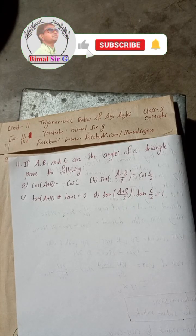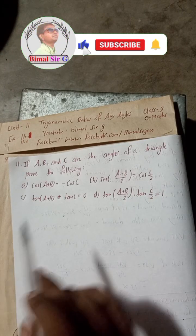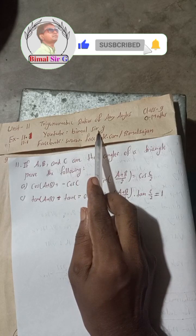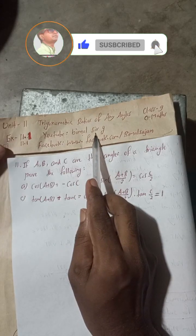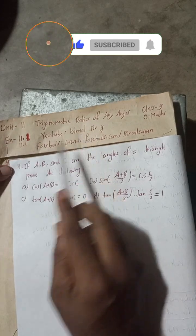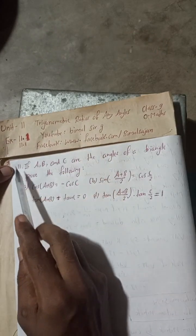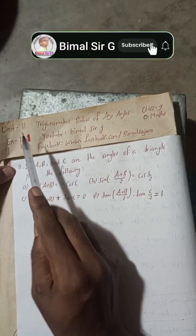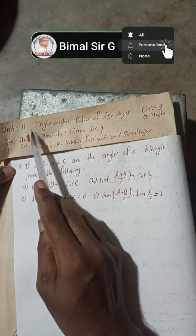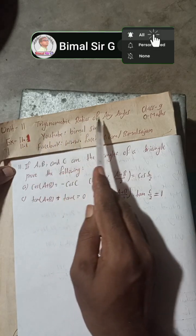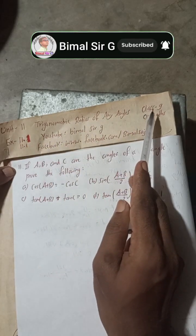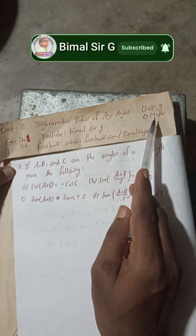Radhe Radhe, Jaya Sri Krishna. Class 9 and 10 students, welcome back to Bhimalsarji YouTube channel. This is question number 11 of exercise 11.1, unit 11, trigonometric ratios of any angles, class 9 optional maths.